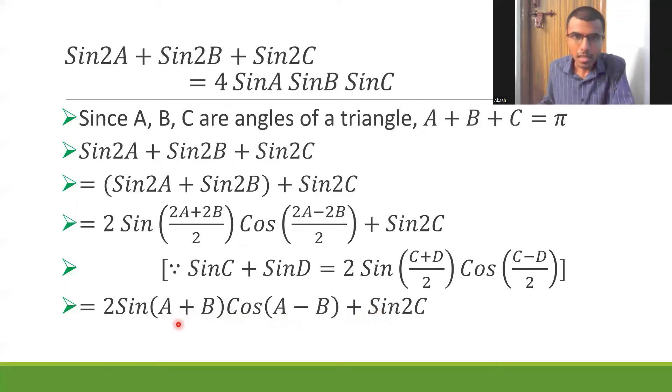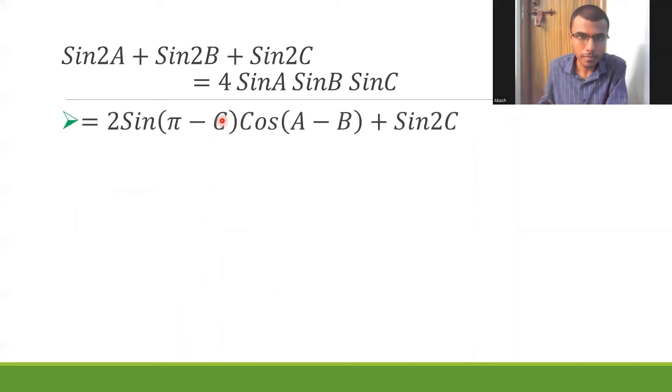Next, since A + B + C is equal to π, if I send C to the other side I'd get A + B as π - C. So in place of A + B here I'm going to put it as π - C.